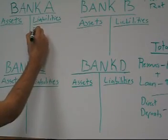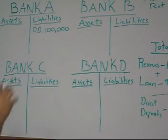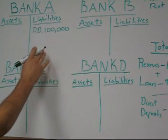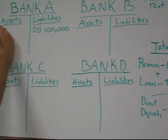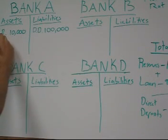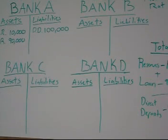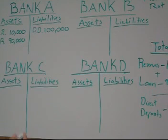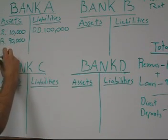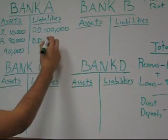Let's start out with someone depositing $100,000 into Bank A. That's a direct deposit, listed under Bank A's liabilities because it must pay it back. With a reserve ratio of 10%, 10% of $100,000 is $10,000 kept as the reserve ratio, leaving an excess reserve of $90,000. That $90,000 isn't going to sit in the bank — someone named Joe comes to Bank A and takes a loan for $90,000. That loan is an asset to the bank, and Joe gets a direct deposit of $90,000.